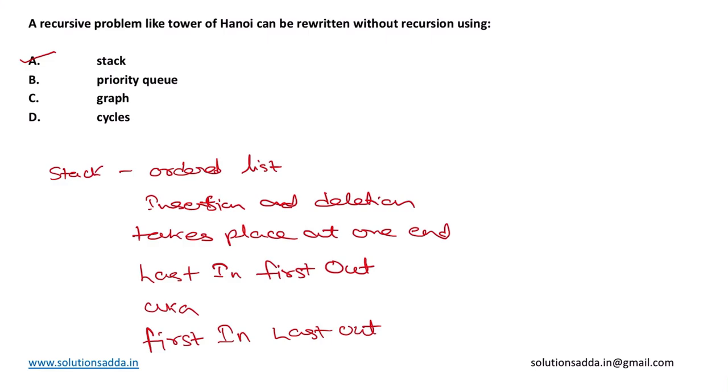The recurrence relation for Tower of Hanoi is T(n) equals 2T(n-1) plus 1. This is the recurrence relation for Tower of Hanoi.